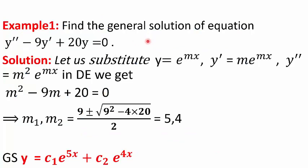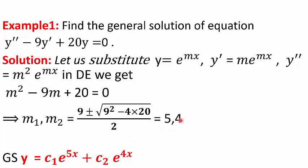Example 1: Find the general solution of y'' − 9y' + 20y = 0. Substituting y = e^(mx) gives the auxiliary equation m² − 9m + 20 = 0. Solving this yields two distinct roots 5 and 4. This is Case 1, so the general solution is y = c1·e^(5x) + c2·e^(4x).